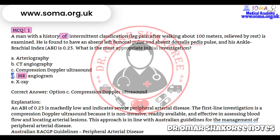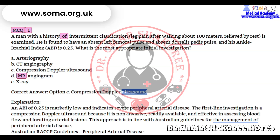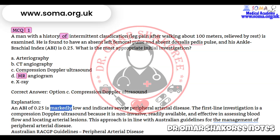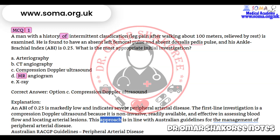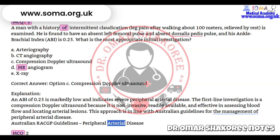Correct answer: Option C — Compression Doppler ultrasound. Explanation: An ABI of 0.25 is markedly low and indicates severe peripheral arterial disease. The first-line investigation is compression Doppler ultrasound because it is non-invasive, readily available, and effective in assessing blood flow and locating arterial lesions. This approach is in line with Australian RACGP guidelines for the management of peripheral arterial disease.